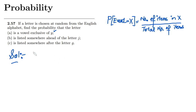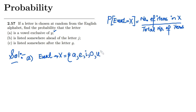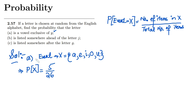So as part A is concerned, this is a vowel problem. The event X consists of all the items which are a, e, i, o, u. The total number of alphabets or letters in English are 26, and these vowels are 1, 2, 3, 4, 5. So the probability of X would be 5 divided by 26, and that is the answer of part A.